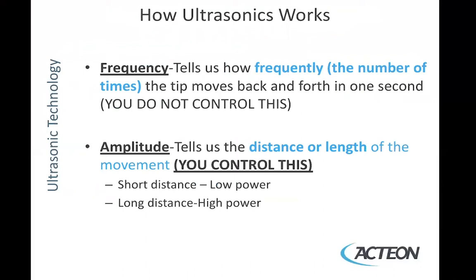How does ultrasonics work? There are two basic features: frequency and amplitude. The frequency tells us how many times the tip moves back and forth in one second — this is controlled by the circuitry, not by you. What you can control is the amplitude, which tells us the distance or length of the movement. A shorter distance is low power; a longer distance is high power.